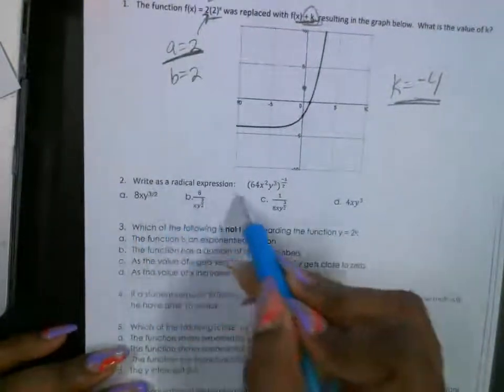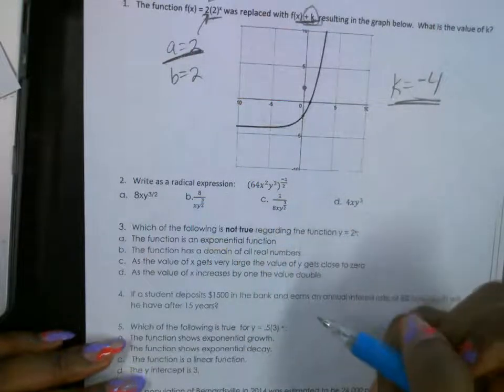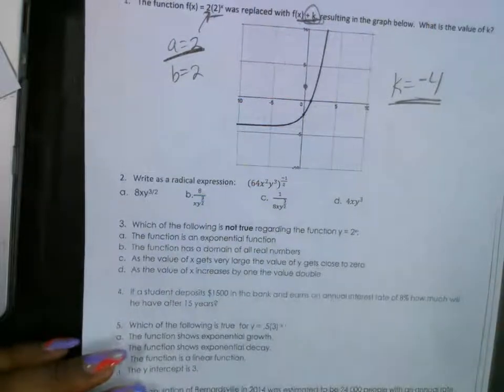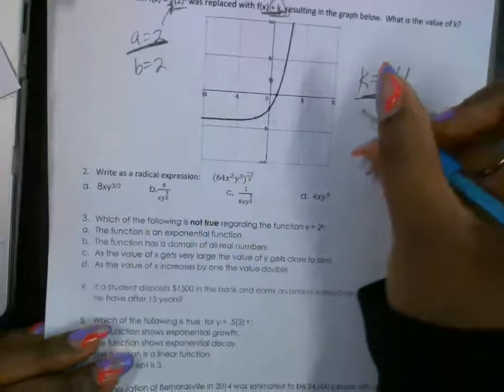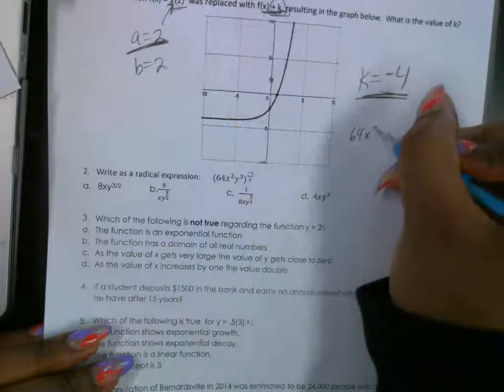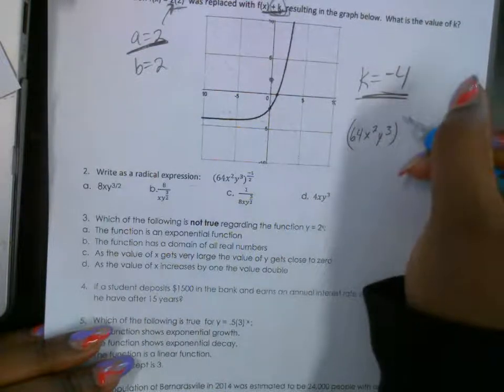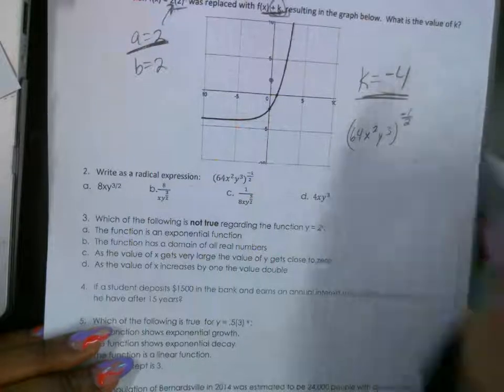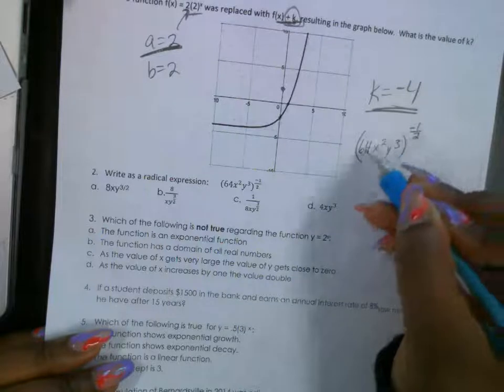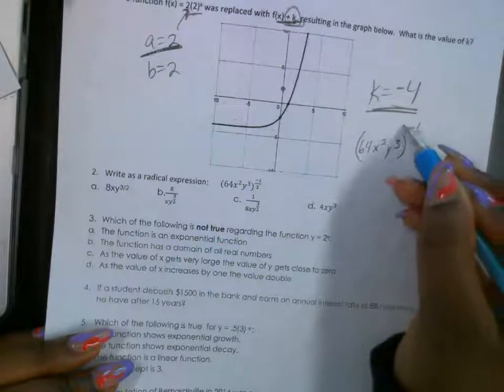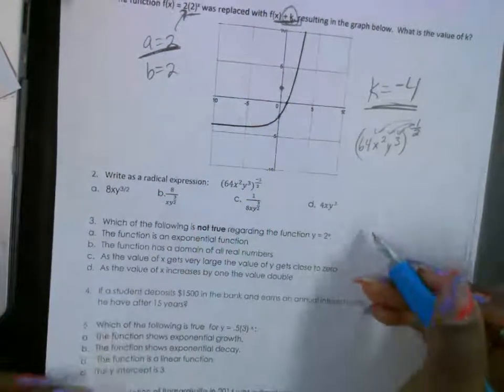Number two, write as a radical expression. Okay? So they want us to write this as a fraction. All right? Radical expression. All right. So notice how all the answers are written as a fraction. So let's look. So I'm going to rewrite. We got 64x to the second, y to the third, and we got to the power of a negative one half. Okay? So let's distribute. Let's go ahead and just multiply the power of a power. Let's multiply this exponent times all the exponents that are in the parentheses. That'll be easier.